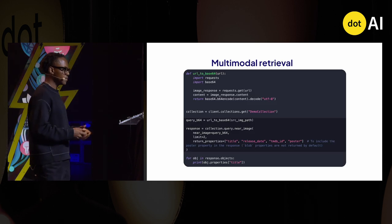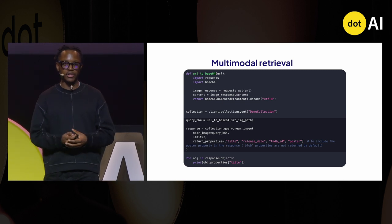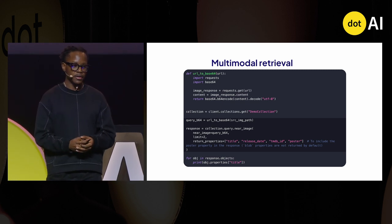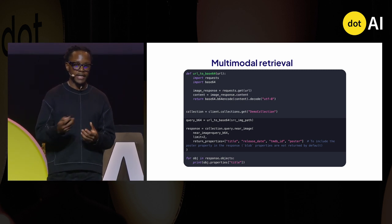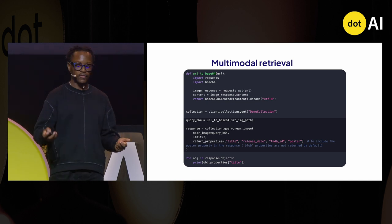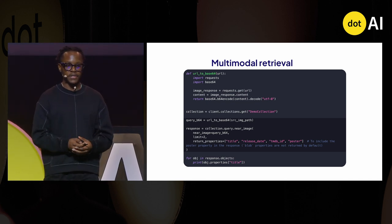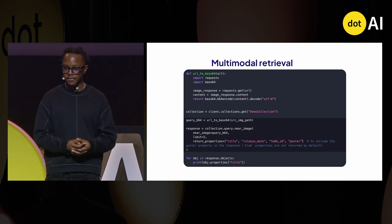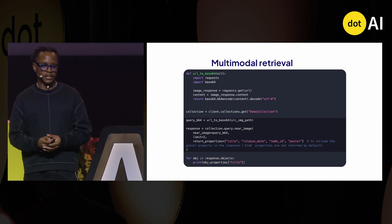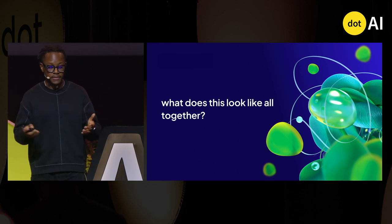This is what that code looks like using a tool like Weaviate, where you see the near image function. We pass in the base64 representation of an image — if we want to search for a movie poster, for example — and then retrieve results based on similarity.